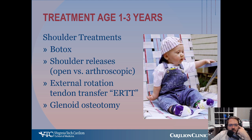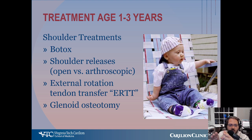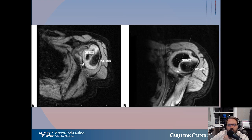Treatment at age one to three years, as discussed, is really focused on the shoulder. Botulinum toxin is a great option — it minimizes the pull of the internal rotators and can ward off some of that glenodysplasia. If the glenodysplasia is starting and internal rotation contractures are severe, shoulder releases should be considered — these can be done either open or arthroscopically. External rotation tendon transfers should be considered as well. These have many different names depending on your center; modified Hoffer is what we do. Glenoidosiotomy should be considered if there's fixed dysplasia not improving after the above treatments.